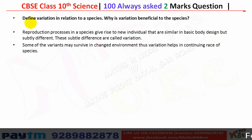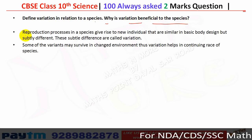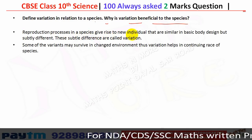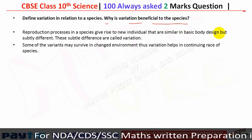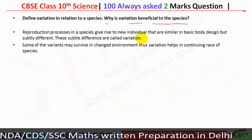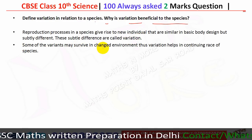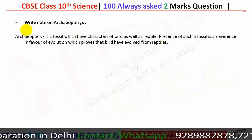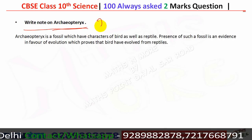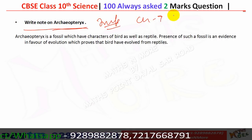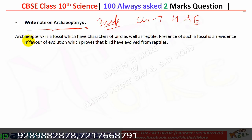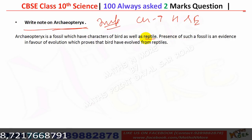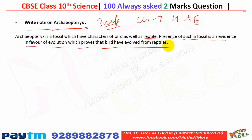Variation refers to the subtle differences in individuals produced during reproduction in a species — they are similar in basic body design but subtly different. Some variations may help an organism survive in a changed environment, thus helping in continuing the race of the species. Archaeopteryx is a fossil with characters of both a bird and a reptile, and its existence is evidence in favor of evolution, proving that birds evolved from reptiles.